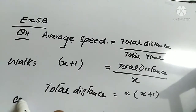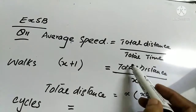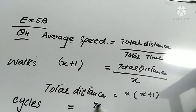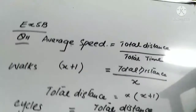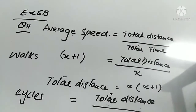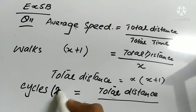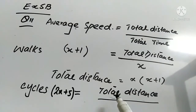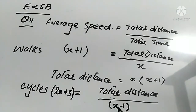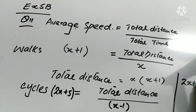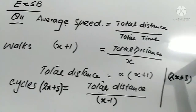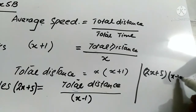In the same way, when she cycles, the formula is the same: Total Distance = Average Speed × Time. Average speed when cycling is (2x + 5) and time is (x − 1). So total distance when cycling = (2x + 5)(x − 1).